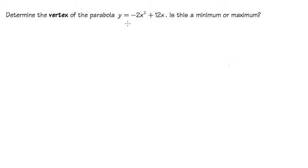We see that the a value is the number in front of the x squared, which is negative 2, and the b value is the number in front of the x, which is 12. The c value is 0, but it doesn't really matter.